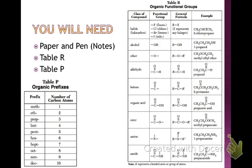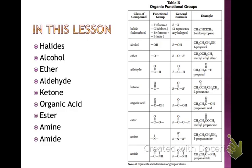Table P gives us the prefixes for any of our hydrocarbons. Table R is new, and we're going to explain all of what table R means. It shows us a class of compounds, the functional groups, the general formula, and the examples. Make sure you have table R with you, because in this lesson we're going to go through each class of compounds and explain what they mean.